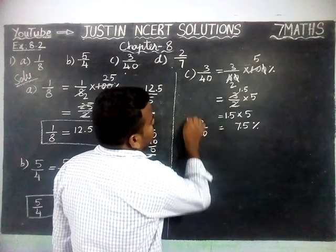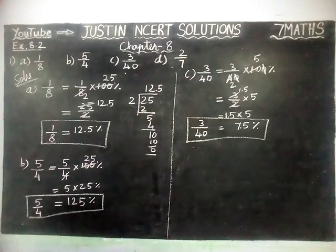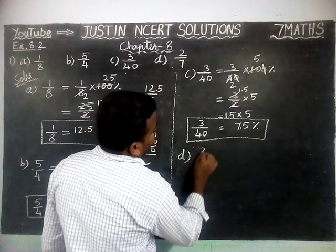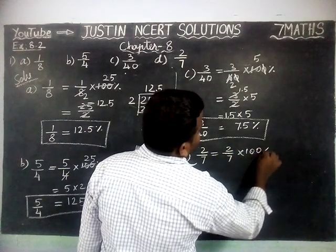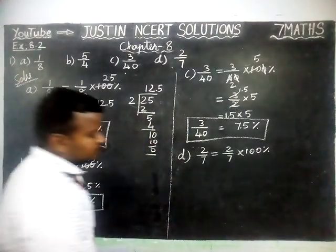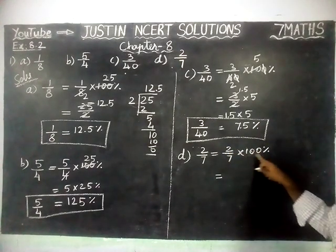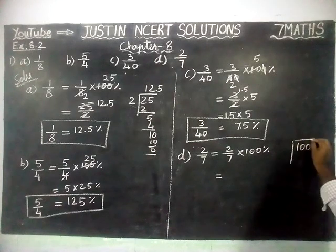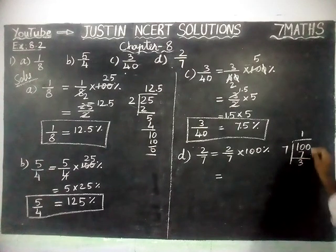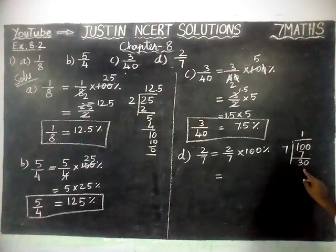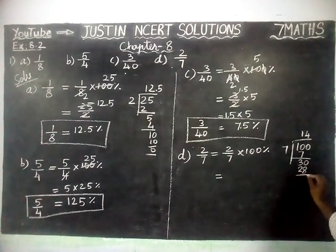Therefore, 3 by 40 is equal to 7.5 percent. Last sum, Part D: 2 by 7 is equal to 2 by 7 into 100 percent. We are going to simplify. We can divide 100 by 7. In 10, 1 seven is there, remaining 3. Now taking 0, in 30, 4 sevens are 28, remaining 2.